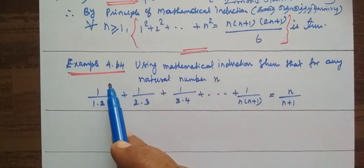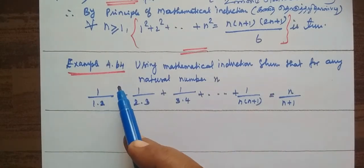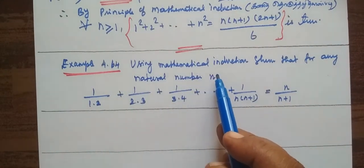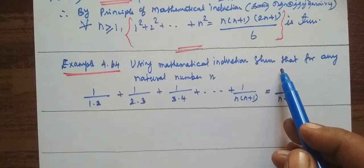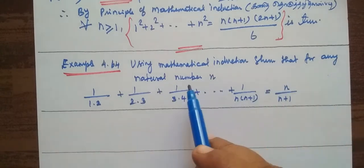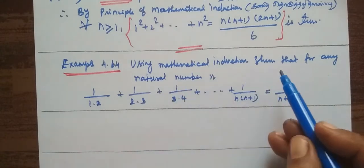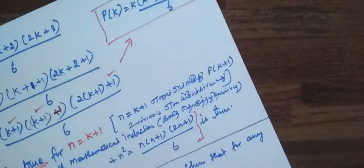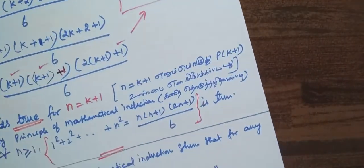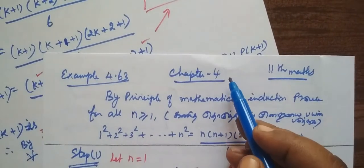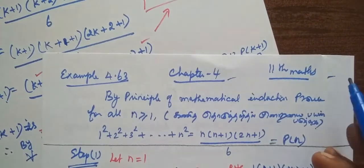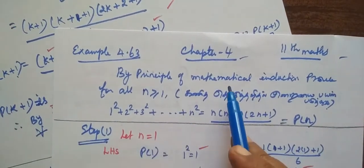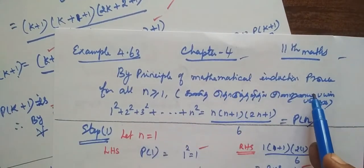Now, Example 4.64: Using Mathematical Induction, show that for any natural number. Following the 11th math from the last video, we will continue with Chapter 4 — the 11th math by Prince Clark, Mathematical Induction.